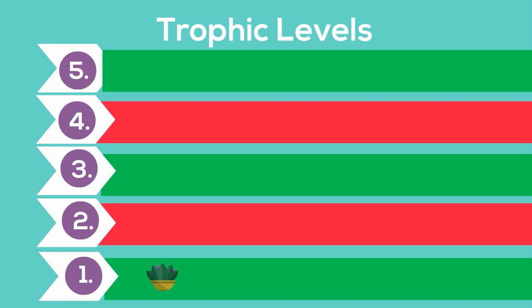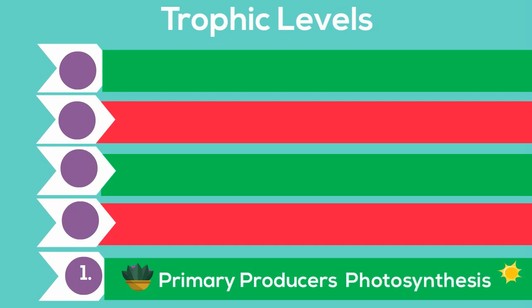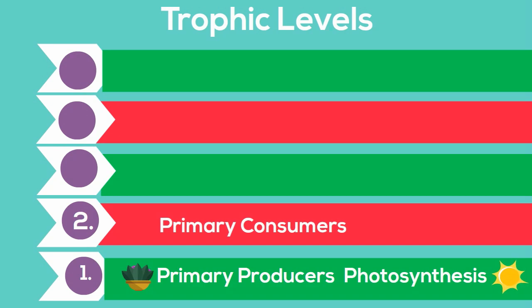Level 1 are primary producers. Examples include plants and algae, and they use photosynthesis in order to make their food. Level 2 are primary consumers because they eat other producers. They are also classified as herbivores because they eat only plants. A cow is an example.